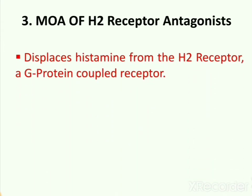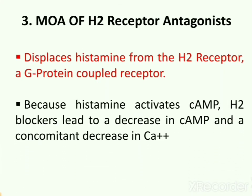Modification of H2 receptor antagonists: H2 receptors are the second type of histamine receptors and are G protein-coupled receptors. H2 receptor antagonists displace histamine from the H2 receptor. Because histamine activates cyclic amino monophosphate, H2 blockers lead to a decrease in the concentration of cyclic amino monophosphate and also decrease the concentration of calcium 2+ ions. Cyclic amino monophosphate is a second messenger important in many biological processes and used for intracellular signal transduction.